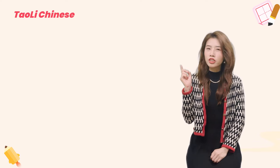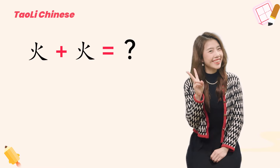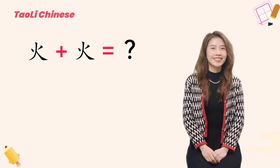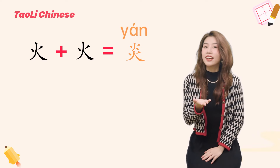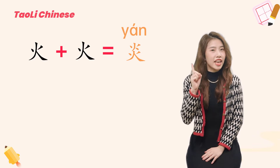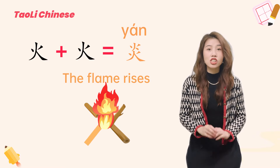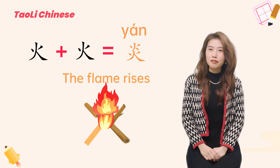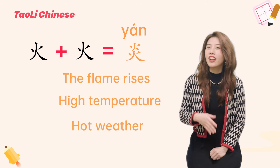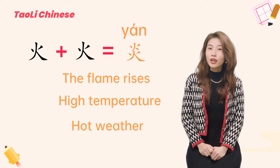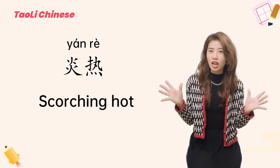Have you ever wondered what character would be if I put two 火 together? Well, the answer is 炎. 炎 literally means the flame rises, the fire gets stronger. So in daily life, 炎 usually indicates high temperature and hot weather. For example, 炎热 means scorching hot.